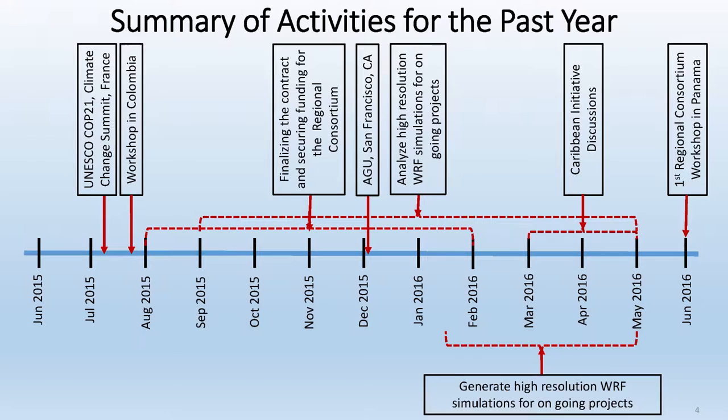This figure here provides a snapshot of what we have been working on for the past year. Each of these boxes could take hours to discuss, but I'm going to focus on the most important ones — starting with the first regional consortium workshop in the corner, because that is what we have been working towards for two years. I'll focus a lot on that and also talk about some other interesting things that came out of this effort.